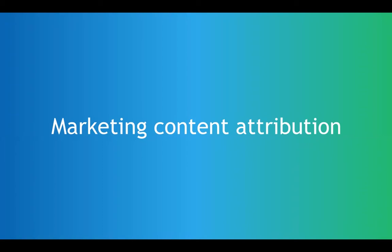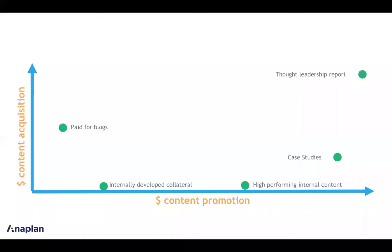But today we wanted to talk about marketing content attribution. It's a follow-on session from our previous week's post about measuring the performance of marketing content. Here on the vertical axis we can see how much it costs us to acquire content, and on the horizontal axis how much we're spending on content promotion. You can see where we've placed some of these types of content in terms of how much we're spending.